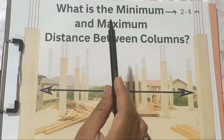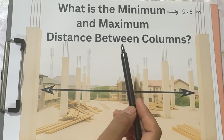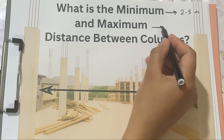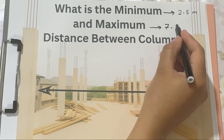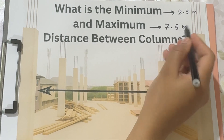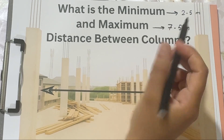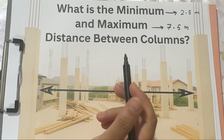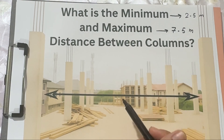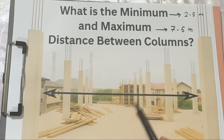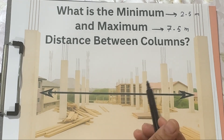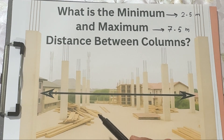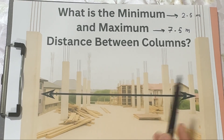Part 4: Maximum distance between columns. On the other hand, the maximum span for normal residential and commercial structures is usually about 7.5 meters — roughly 25 feet. If you go beyond that, the beams spanning between columns become deeper and heavier, which again raises cost and may create deflection problems. But with proper design and stronger materials, even larger spans can be achieved safely.